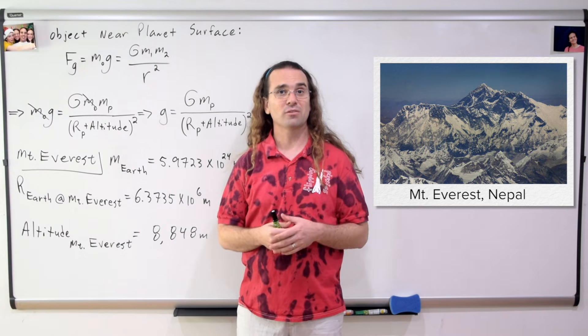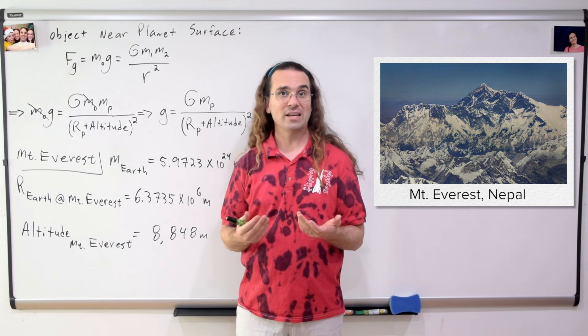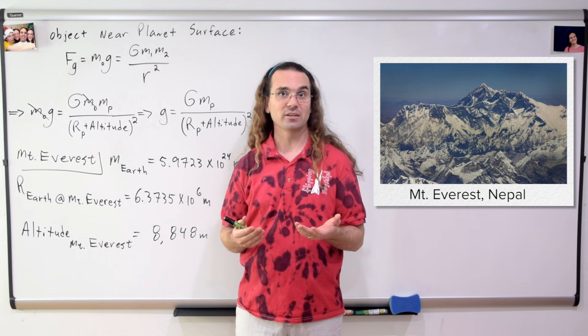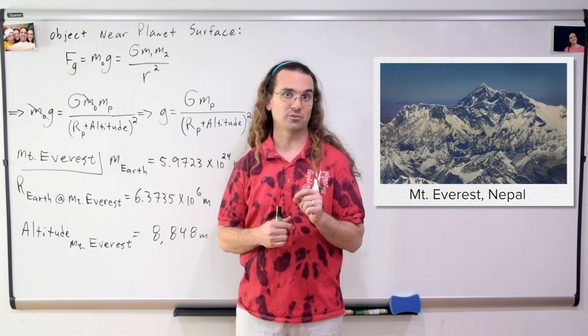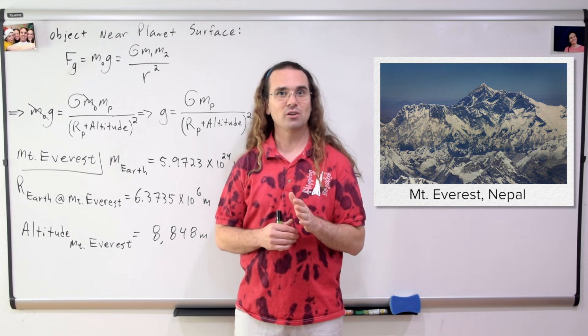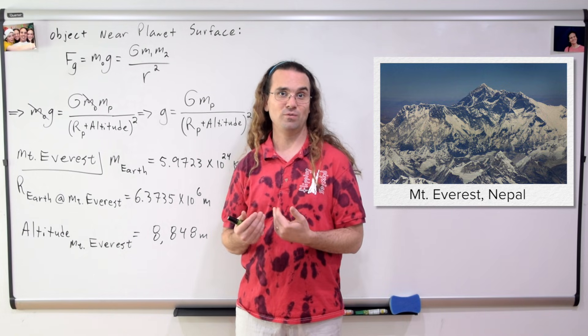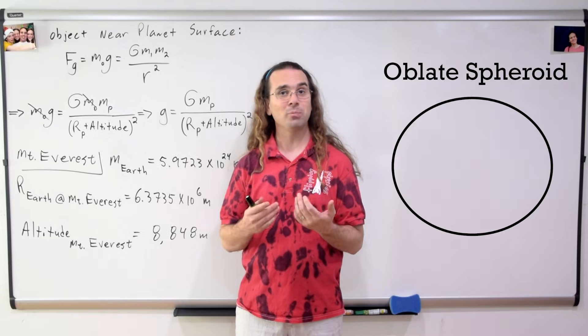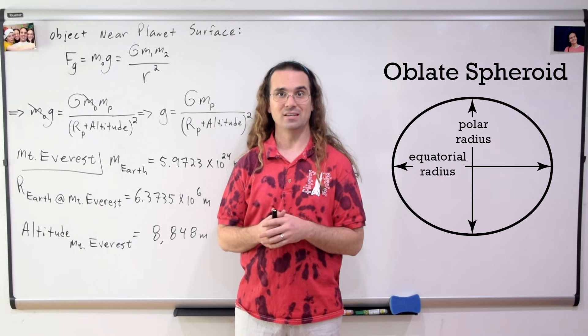The mass of the Earth is 5.9723 times 10 to the 24th kilograms. The radius of the Earth at Mount Everest is 6.3735 times 10 to the 6th meters. Yes, the radius of the Earth is not constant because the Earth is not a perfect sphere.